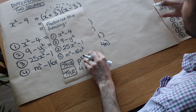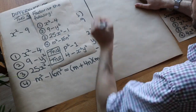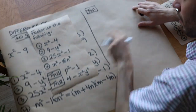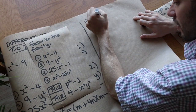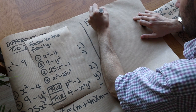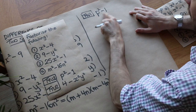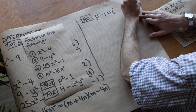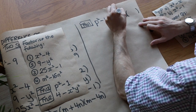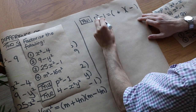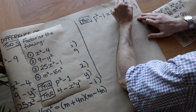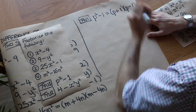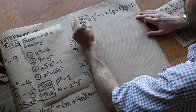Let's go through the solutions. Test your understanding 1: p squared minus 1. That's a squared thing minus a squared thing — it's a difference. So two brackets, one plus, one minus. The square root of p squared is p, and the square root of 1 is 1. So the answer is (p + 1)(p − 1).